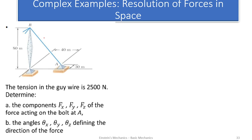Hello, in this episode we are going to tackle complex examples on resolution of forces in space. In the previous episode we solved some simple examples, but here the examples are more complex. The question gives us the tension in a guy wire as 2500 Newtons. We need to determine: (a) the components Fx, Fy, Fz of the force acting on the bolt at A, and (b) the angles θx, θy, θz defining the direction of the force.